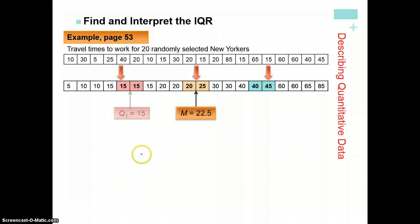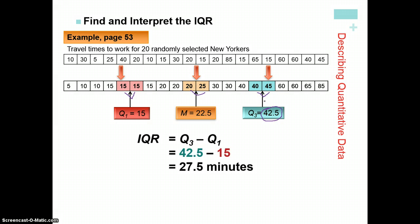So there's our median, 22.5. Our Q1 is 15, the average of both of these is 15. The average of these though is 42.5. So just like we had to find the average of 20 and 25 for the median, you have to find the average of 40 and 45 for the Q3. So we can calculate our IQR now. And it's just 42.5 minus 15, and that is 27.5 minutes.